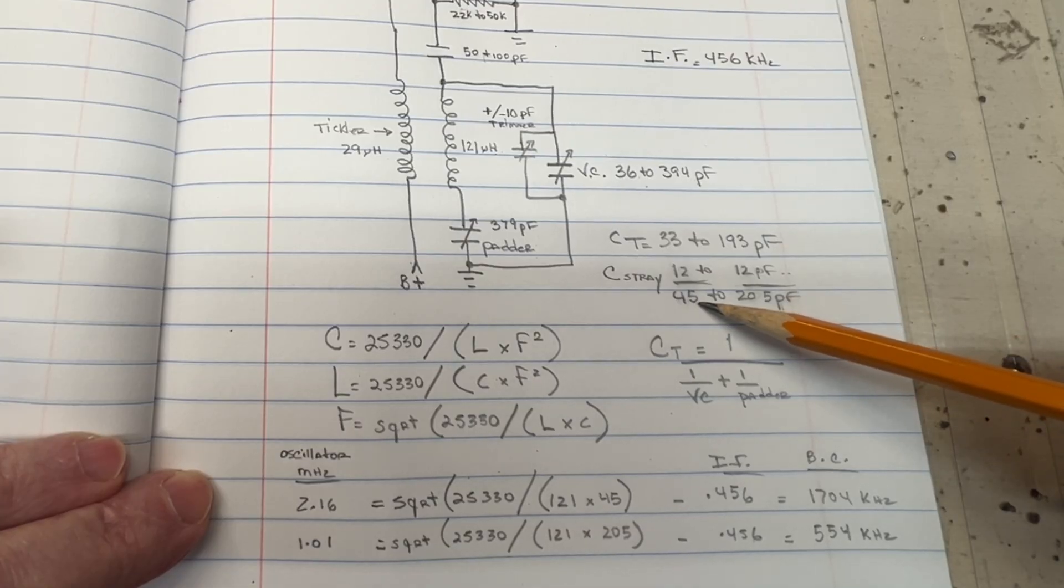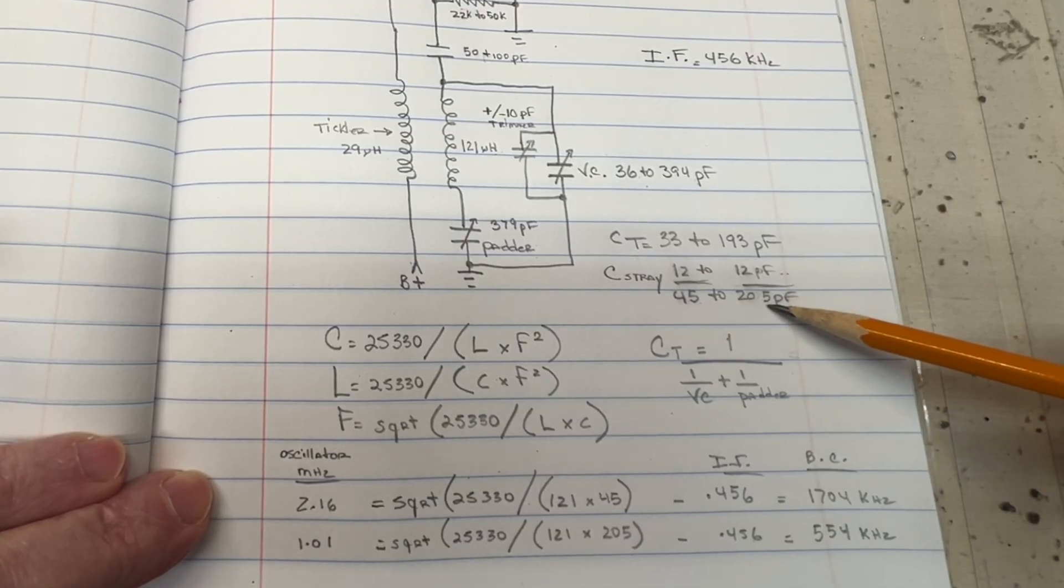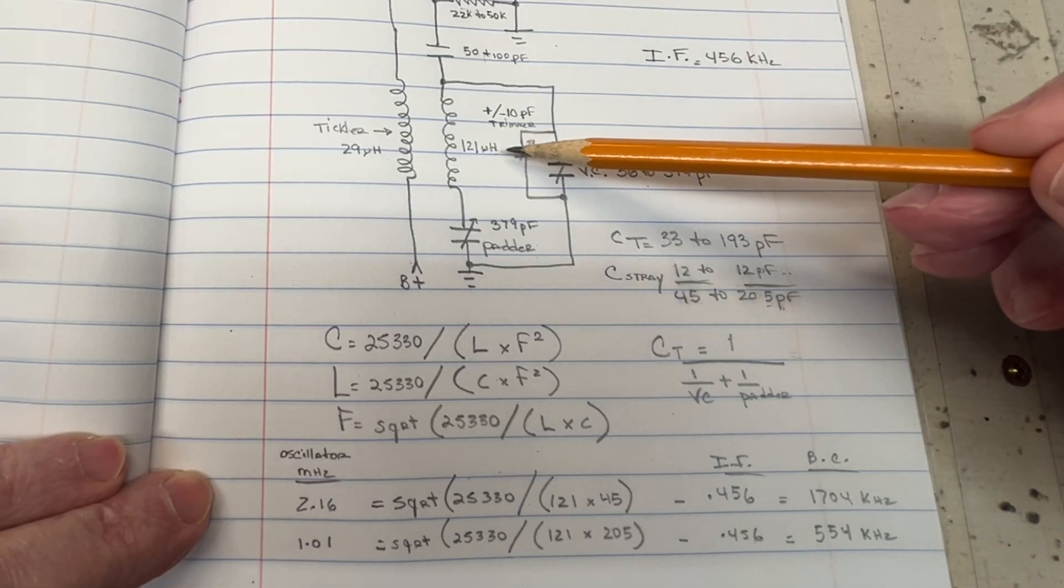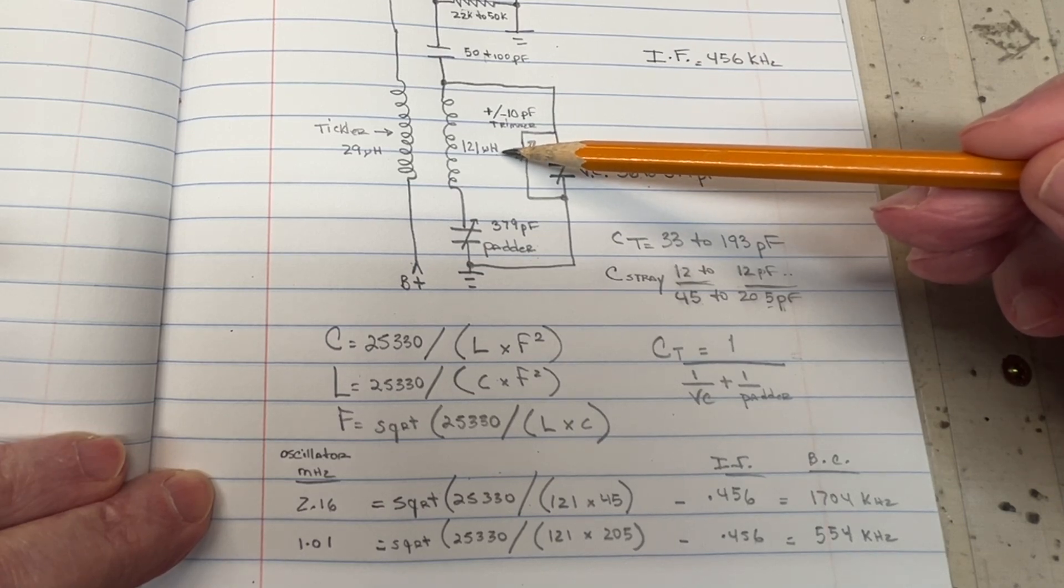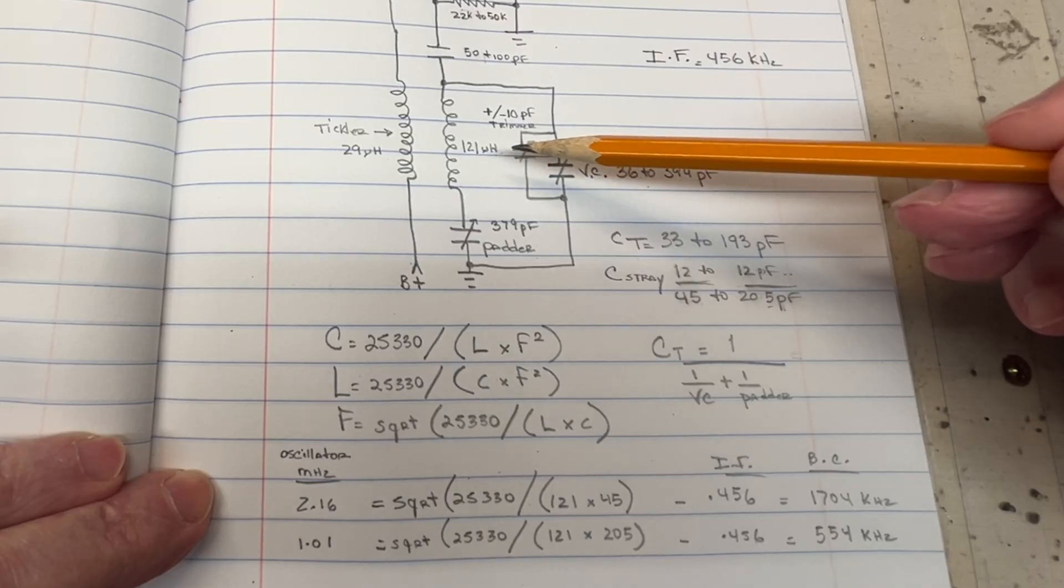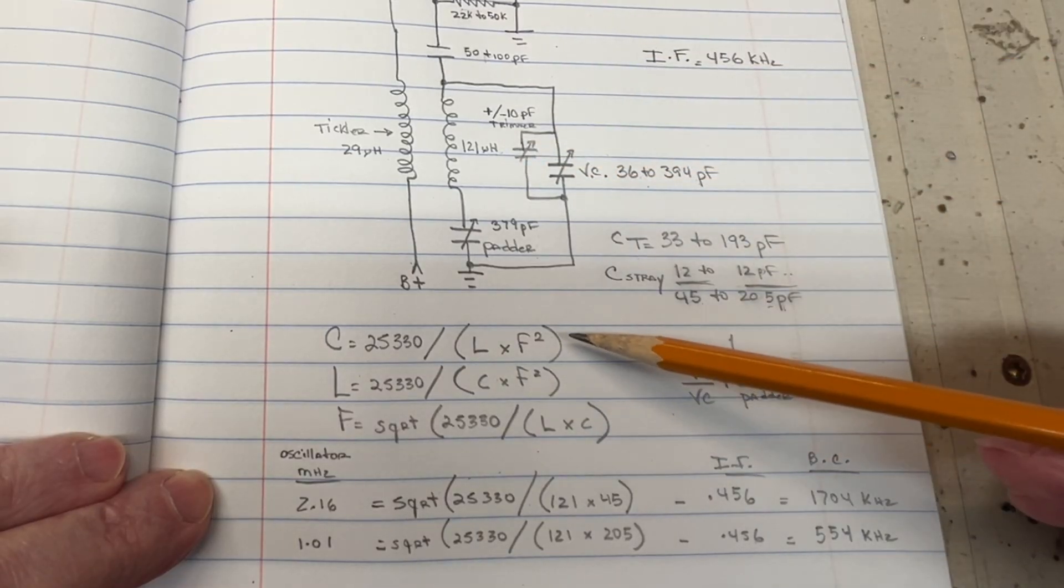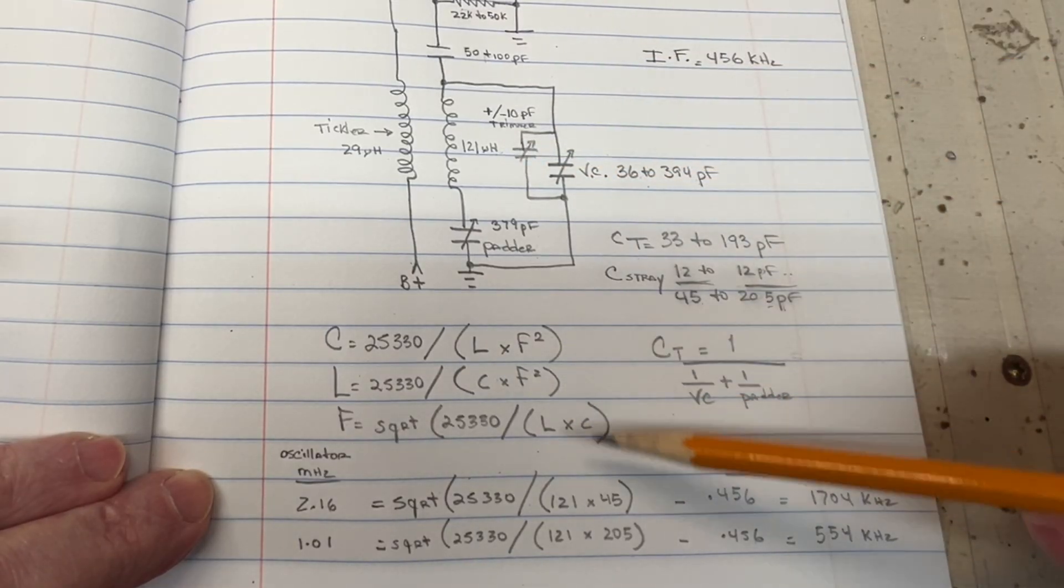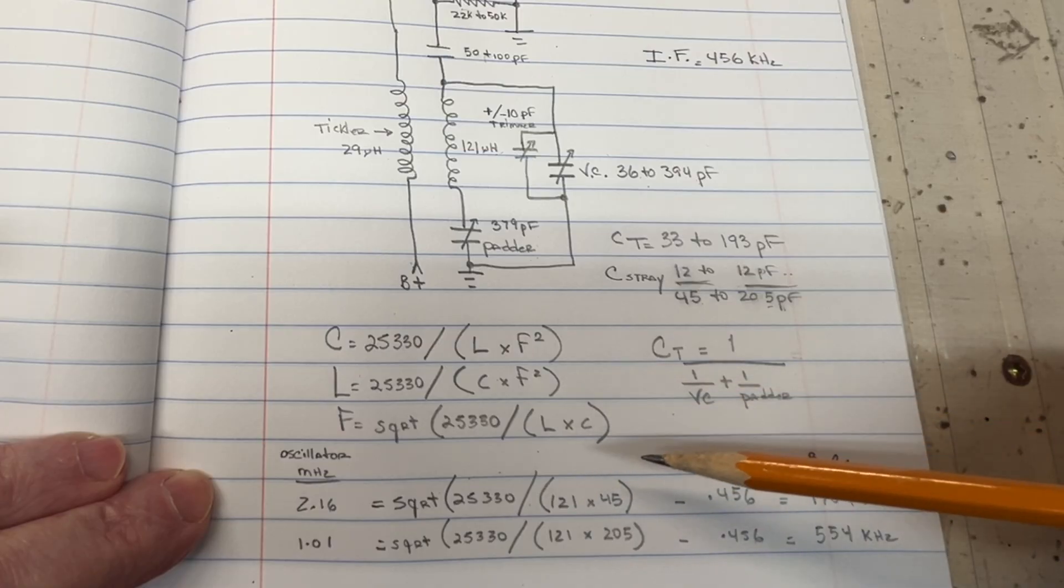So you can see 45 to 205 pF would be typically what the capacitance would be in addition to the 121 microhenry inductor. We can apply these formulas. In this case, we'll just look for frequency. So I can take the square root of 25,330 divided by L times C.